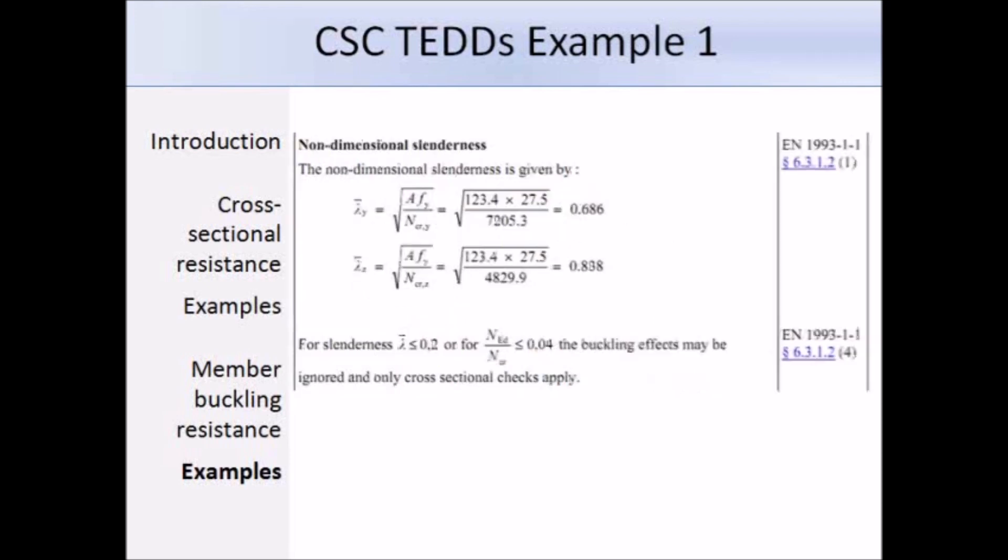Now that we have the elastic critical force, we can work out lambda bar. Substituting in the values we get 0.686 and 0.838 for the different axes. There's a note here that says for a slenderness less than or equal to 0.2, the buckling effects may be ignored. Earlier in the introduction I told you that a column was described as stocky if it met that condition. In this instance both values of lambda bar are above 0.2, and therefore we need to check the buckling resistance.